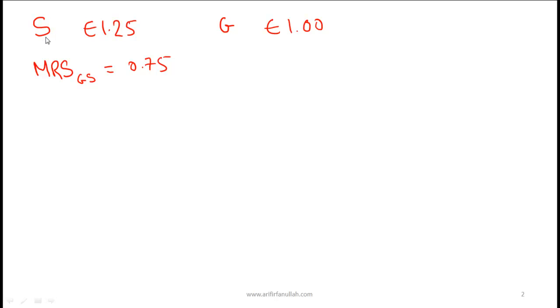The cost of sorbet is €1.25 and the cost of gelato is €1.00. For this particular consumer at his current level of consumption of these two items, the marginal rate of substitution is 0.75 and we have two questions here.